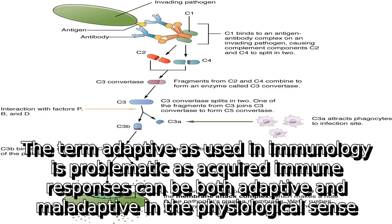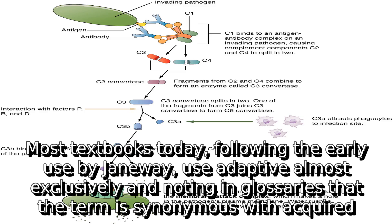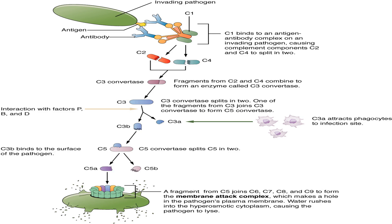The term adaptive is used in immunology as problematic, as acquired immune responses can be both adaptive and maladaptive in the physiological sense. Indeed, both acquired and innate immune responses can be both adaptive and maladaptive in the evolutionary sense. Most textbooks today, following the early use by Janeway, use adaptive almost exclusively, noting in glossaries that the term is synonymous with acquired.